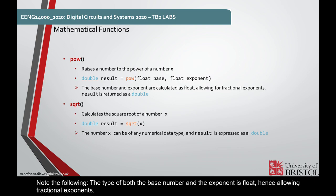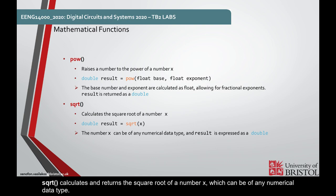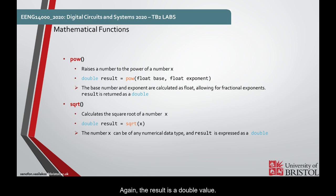Note the following: the type of both the base number and the exponent is float, hence allowing fractional exponents. However, the result is returned as a double. sqrt calculates and returns the square root of a number x, which can be of any numerical data type. Again, the result is a double value.